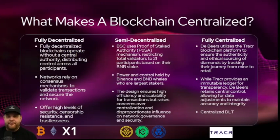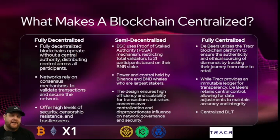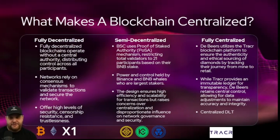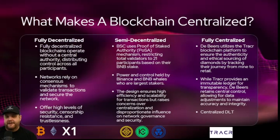Now that we know what a blockchain is — basically distributed ledger technology — what makes a blockchain decentralized or centralized? Here I've prepared examples of some fully decentralized, some semi-centralized, and some fully centralized blockchains. To be honest, it's impossible for a blockchain to be 100% decentralized. When it launches, even Bitcoin, it launches from one central entity.